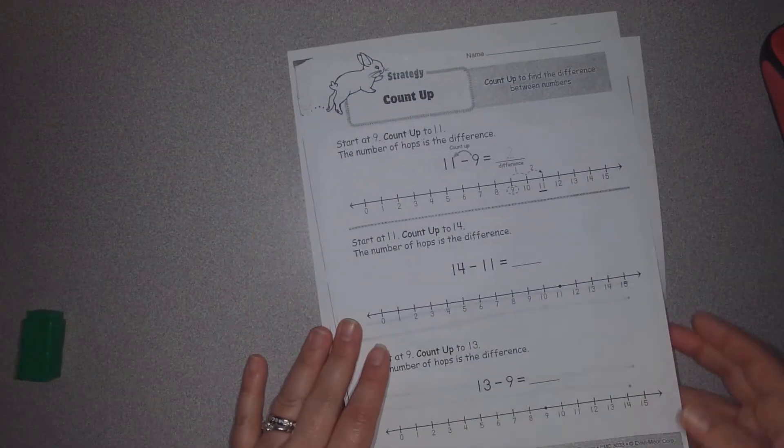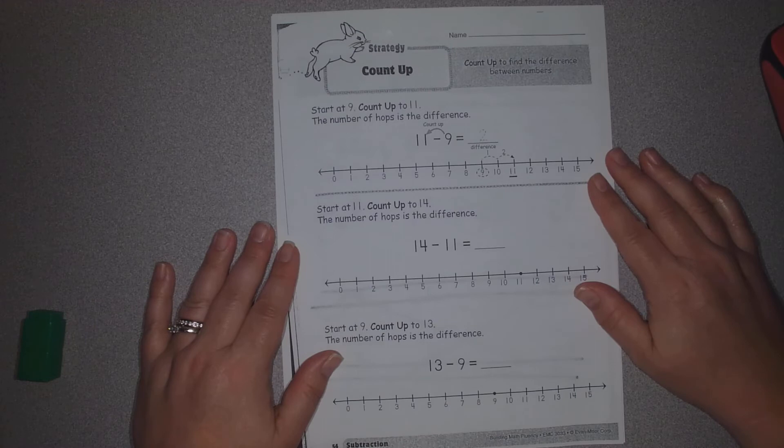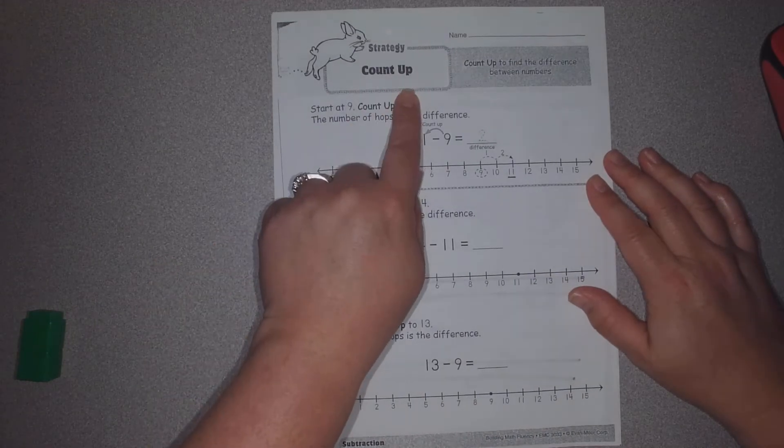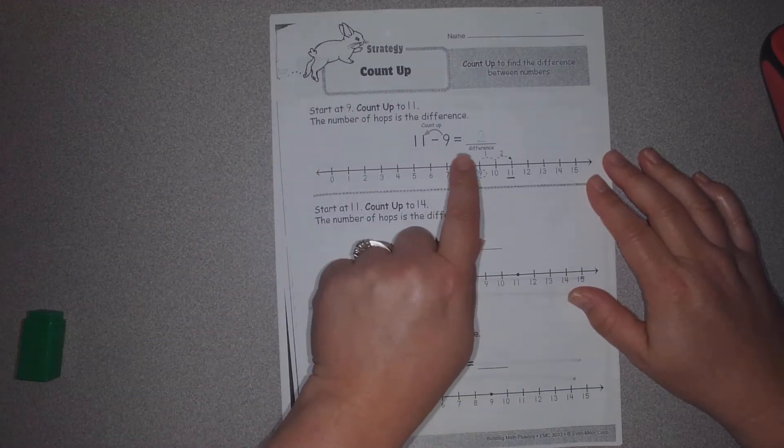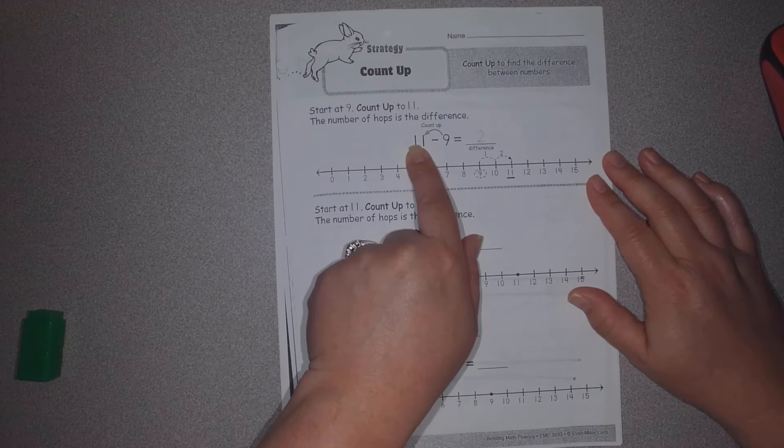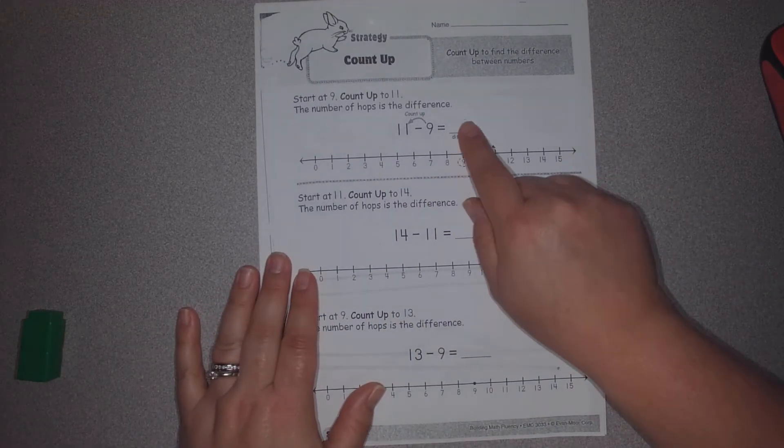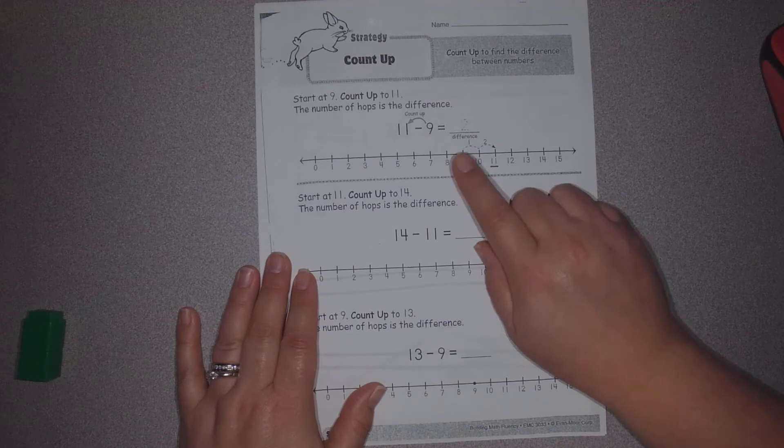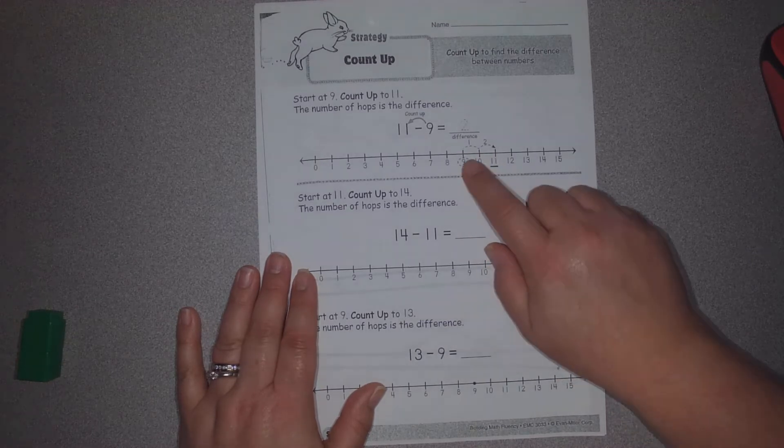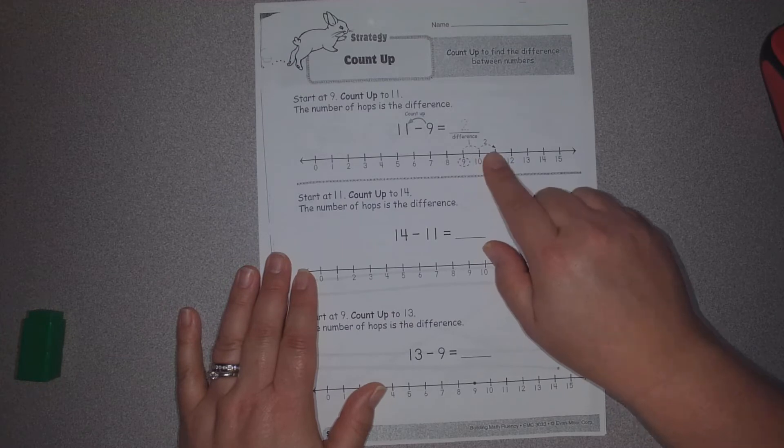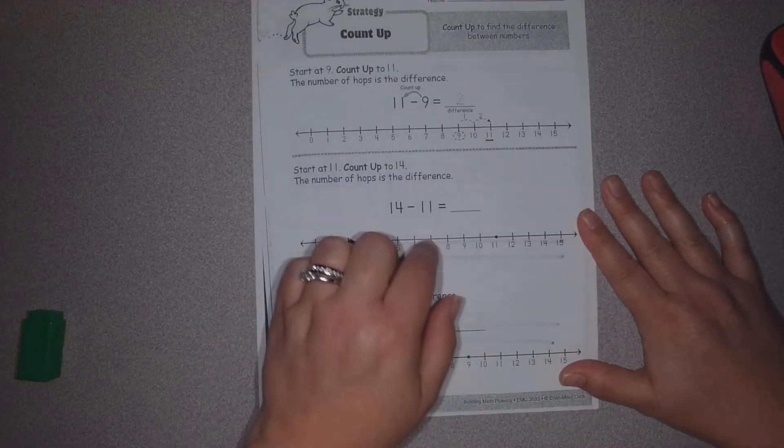The pages you have today look like this. The first one is called count up. And it wants you to start at the smaller number and count up to the bigger number. Just like we did on the other paper. And so then you're writing down the difference. We start at the 9. We count up to the 11. And we record how many jumps we make. So there's a couple of number lines here.